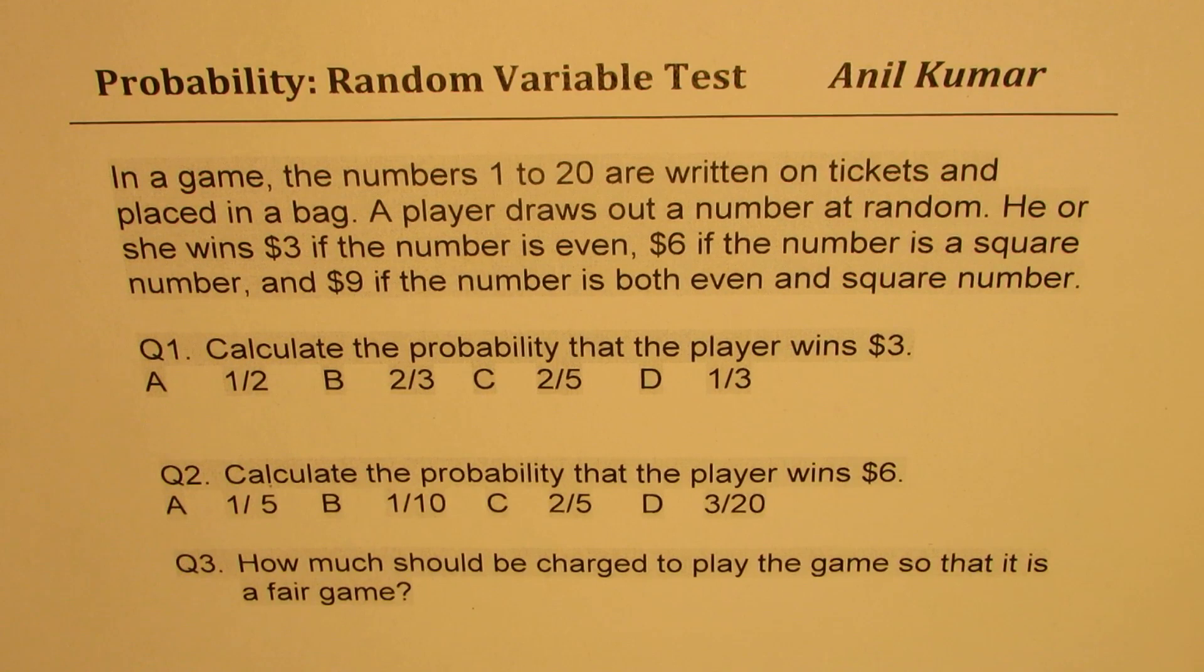In a game, the numbers 1 to 20 are written on tickets and placed in a bag. A player draws out a number at random. He or she wins $3 if the number is even, $6 if the number is a square number, and $9 if the number is both even and square number. Based on this, we have three questions for you.